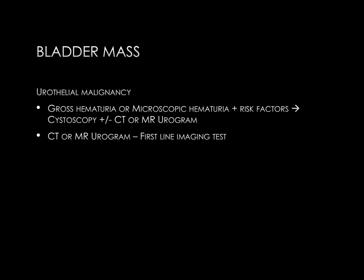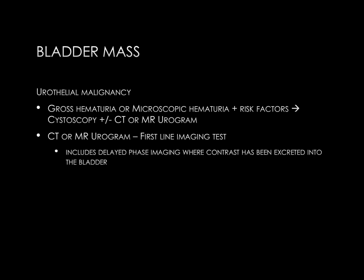The CT or MR urogram is the first-line imaging test for suspected bladder malignancy. This is a multi-phase test which includes a delayed phase where contrast has been excreted into the bladder. There is contrast noted within the collecting systems, ureters, and bladder, so we can outline the normal urothelial tract and look for any wall thickening or filling defects. It's important to include the entire urinary tract in this imaging test, as urothelial cancer is often multifocal.